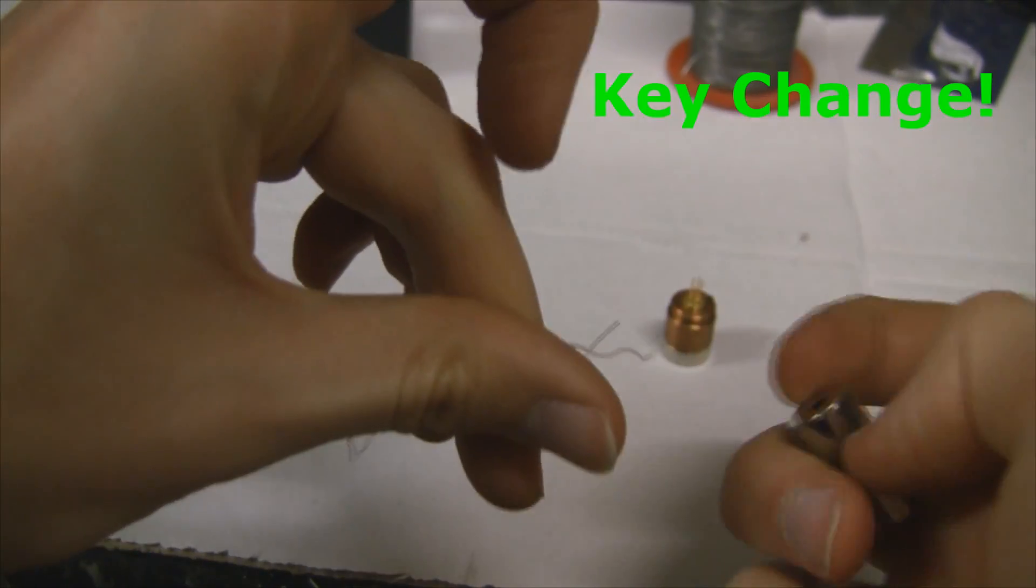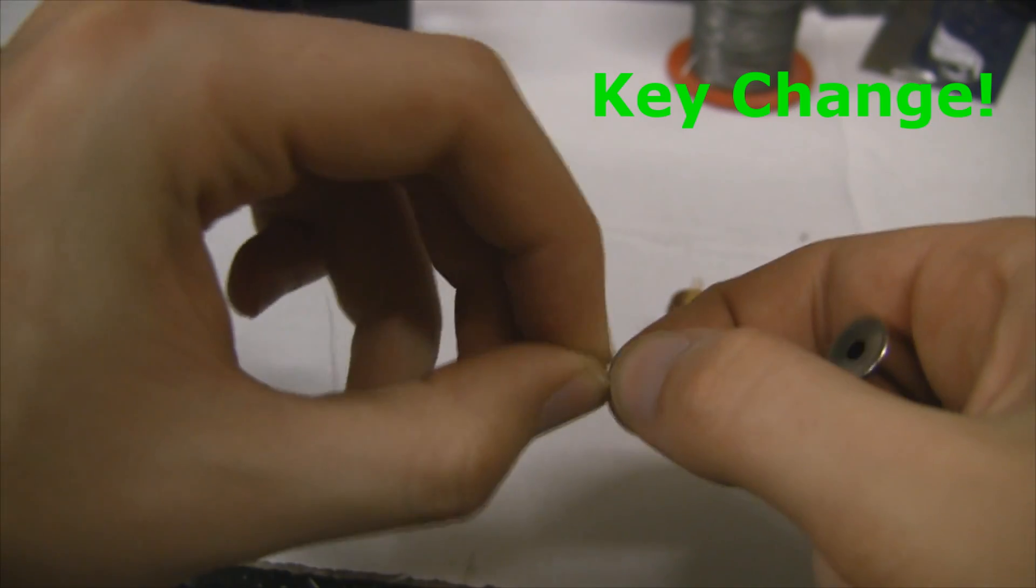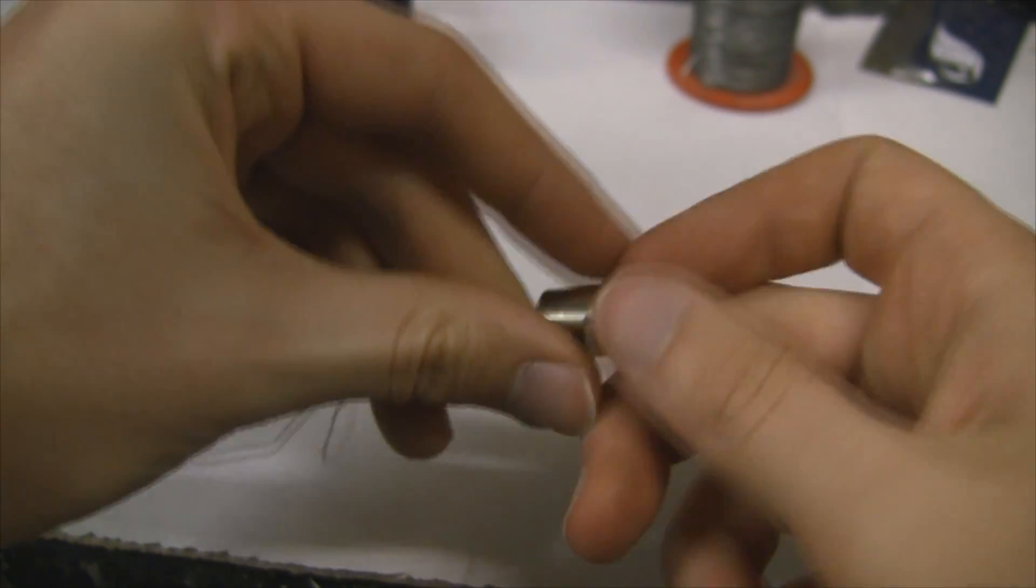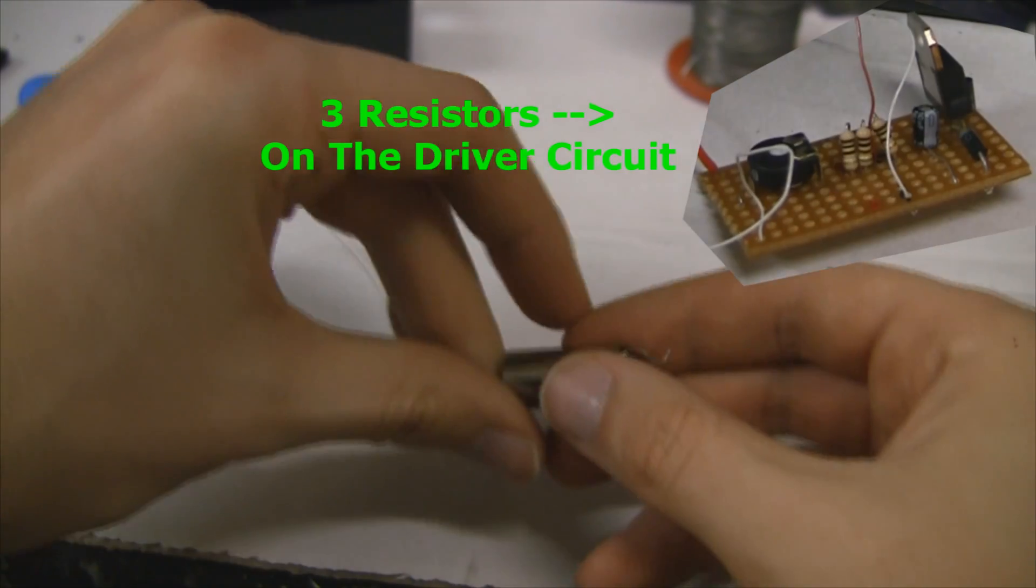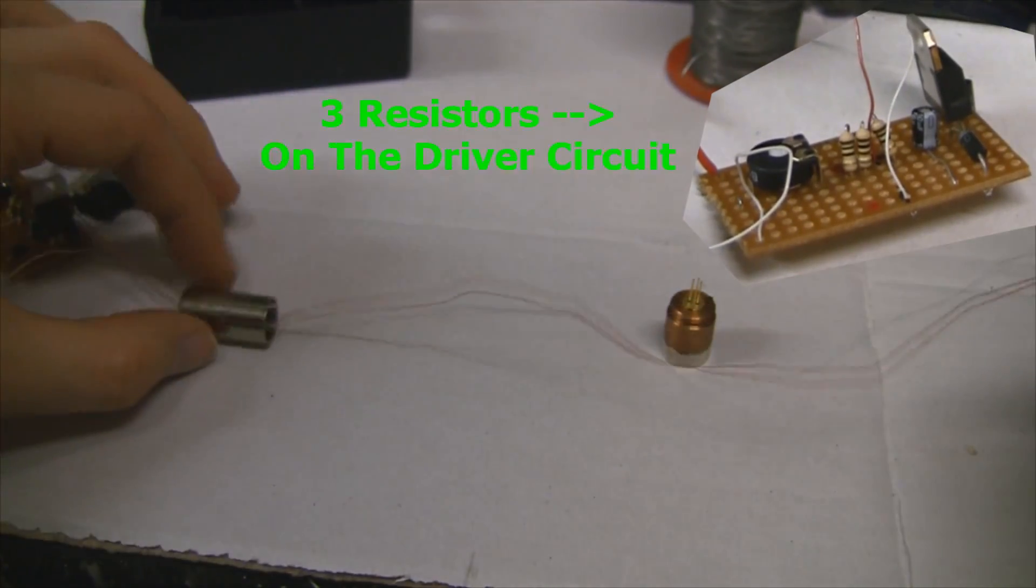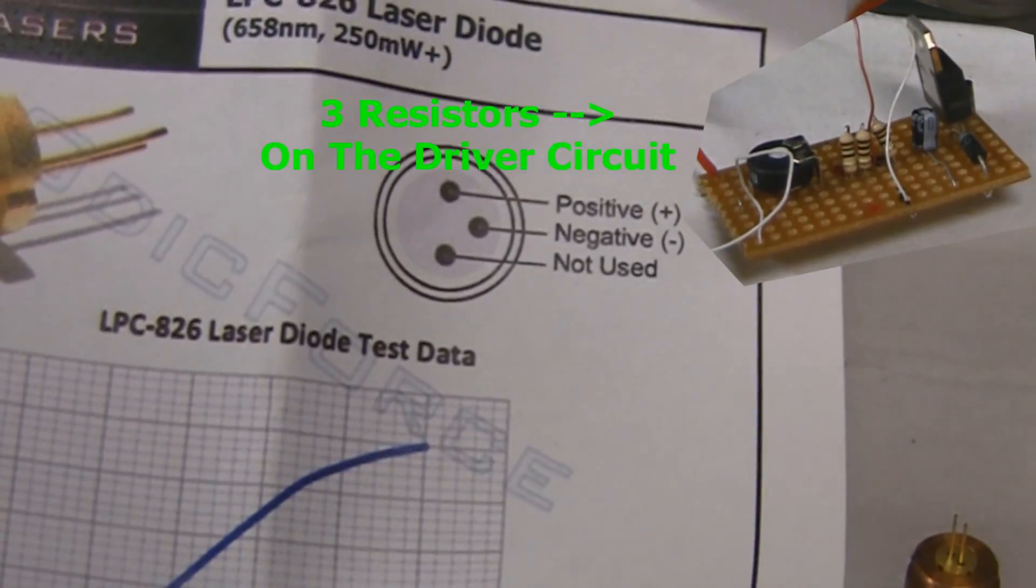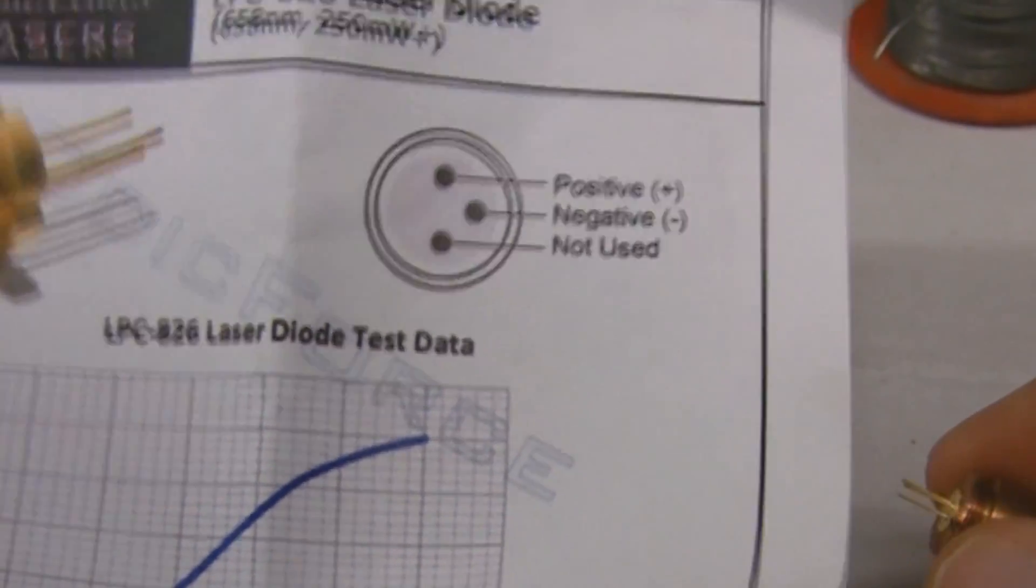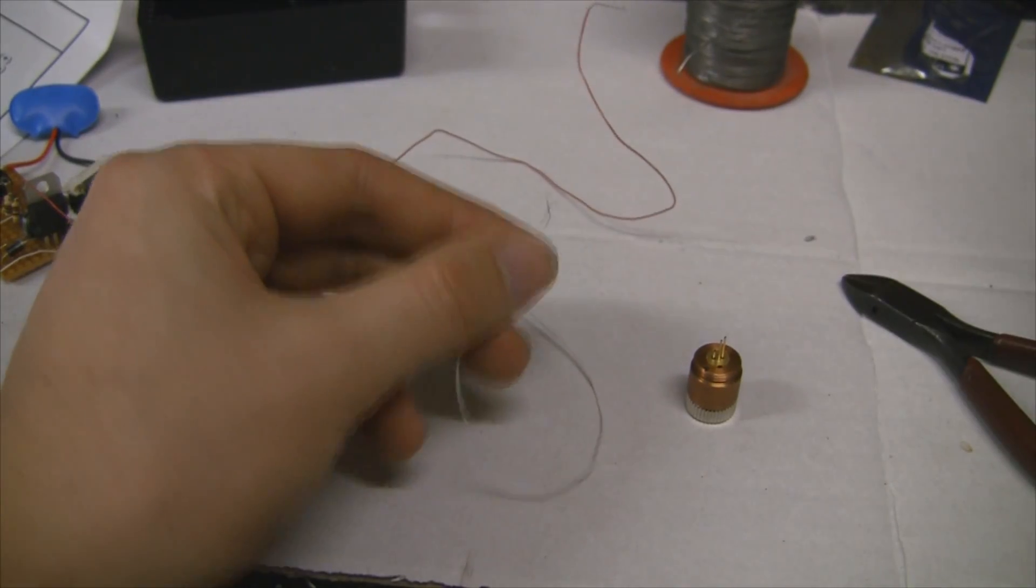And once you've got all that done, you need to take your positive and negative from your driver circuit. This isn't the standard driver circuit. I've added three resistors instead of two to the LM317 circuit. If you don't know what I'm talking about, I'll link some videos in the description. And you can see on the datasheet it comes with a nice pinout, so you'll never be confused.